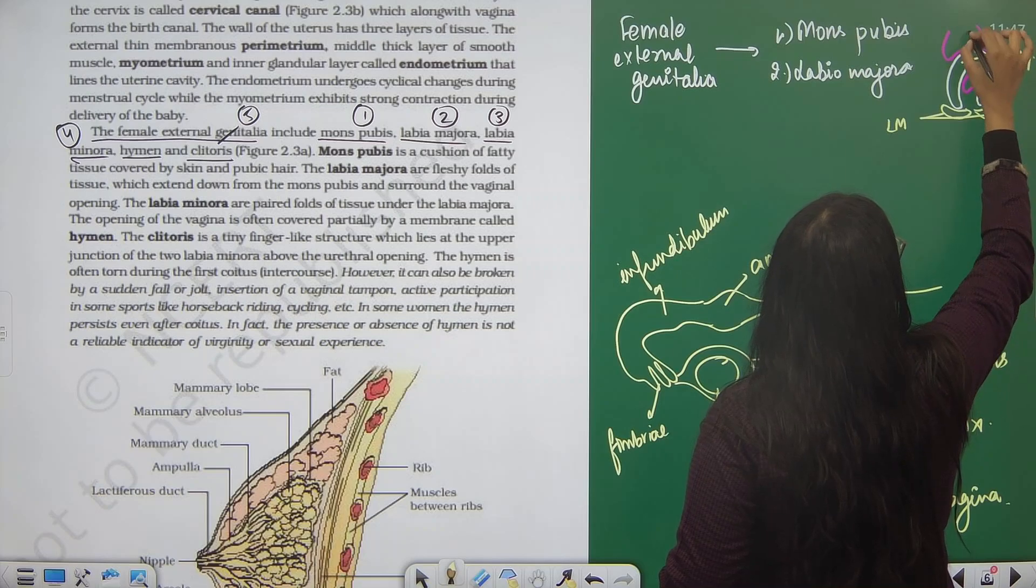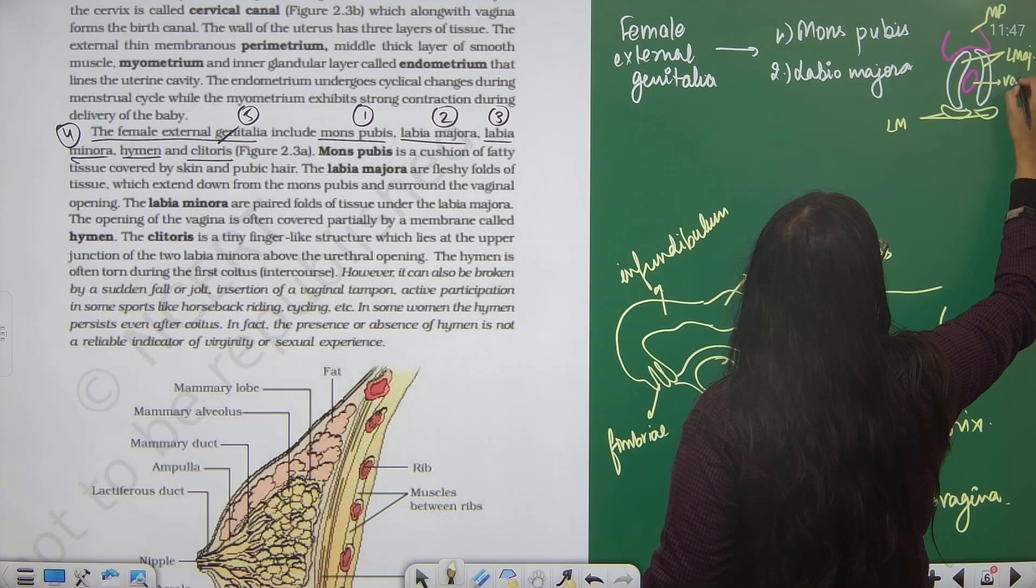This is labia majora, this is mons pubis, this is vaginal opening.